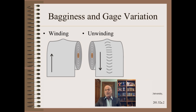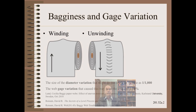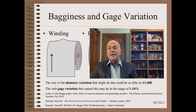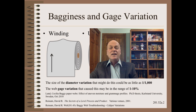Bagginess, in turn, is one of the largest causes of wrinkling, waste, and customer complaints. If for no other reason than bagginess and wrinkling, we would want to know about oscillation. What may surprise many is just how little diameter difference is needed to wreck a roll — it could be a diameter difference as little as one part in one thousand. Similarly, just how little thickness variation is needed to wreck a roll: the range of thickness is on the order of one to ten percent.